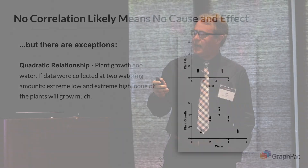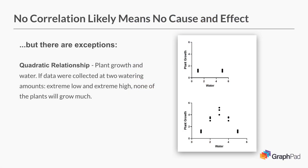I added this one myself. If you look at this top graph, I have a little experiment looking at plant growth, with plants that received almost no water and plants that received a lot of water — and there's really no difference, no correlation between water and plant growth. But in the middle you can see that if we had collected data at moderate levels of watering, we'd see decent growth on the plant. There is a strong relationship, but you don't see it because you only looked at two data points and the relationship was quadratic. So that's another way you can miss a cause and effect when there's no apparent correlation.